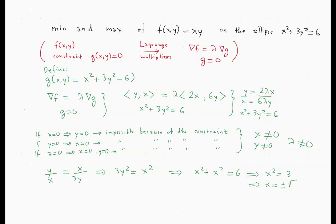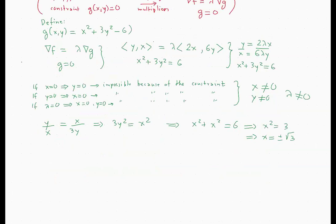If x = √3, we go back to the constraint: 3 + 3y² = 6, which gives y² = 1, so y = ±1. This yields two points: (√3, 1) and (√3, −1).